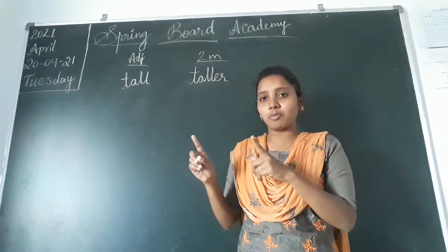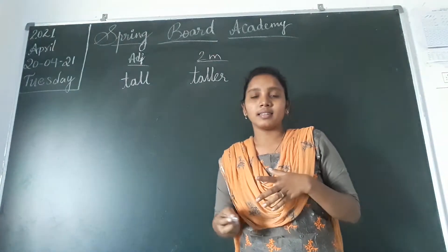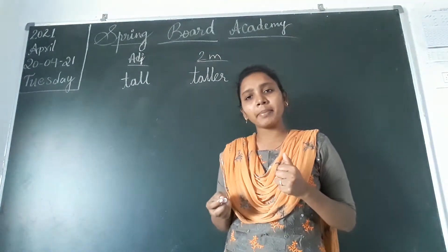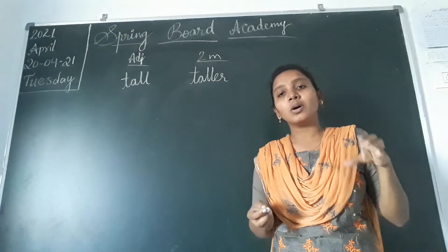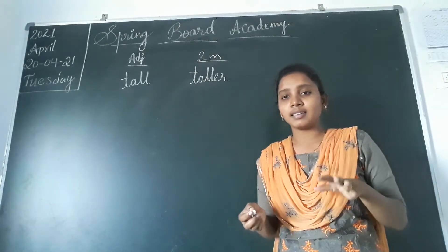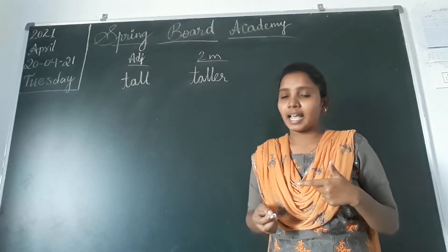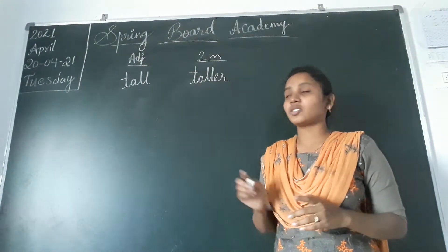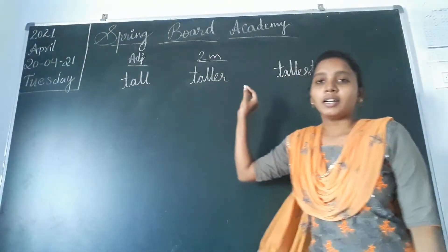Now, consider one boy — for example, his name is Rahul. Rahul is the tallest boy in the class. With whom am I comparing? With the whole class. So we say Rahul is the tallest boy, not the taller boy. When comparing with more than two, 'tall' becomes 'tallest.' So we have: tall, taller, tallest.